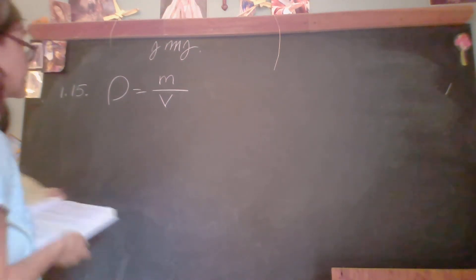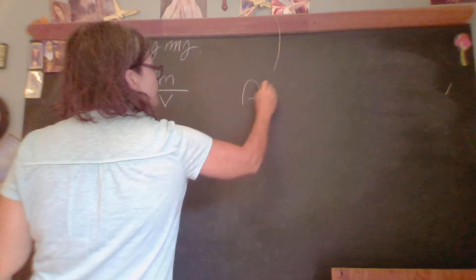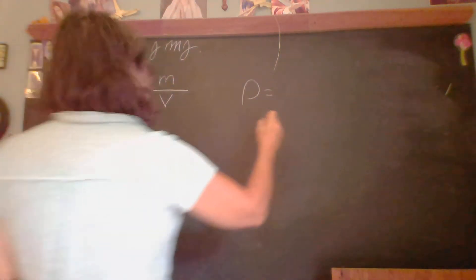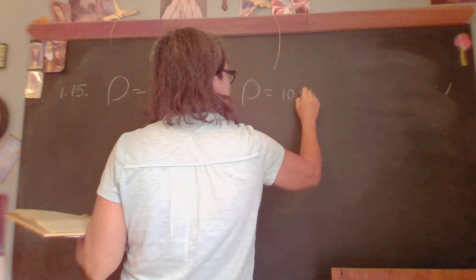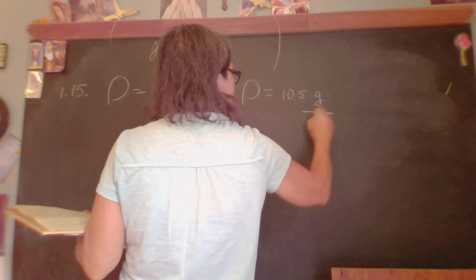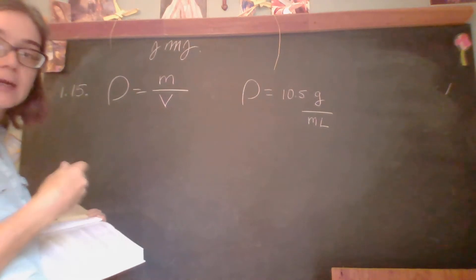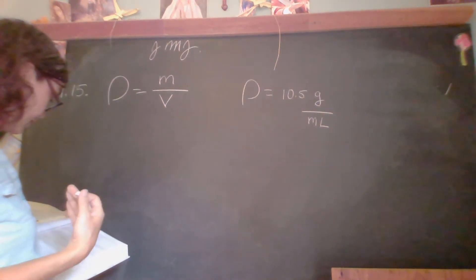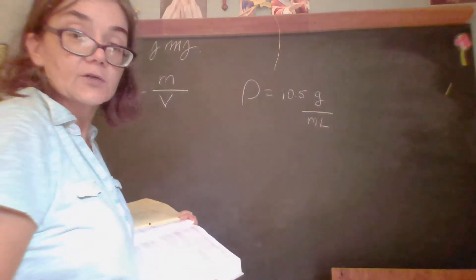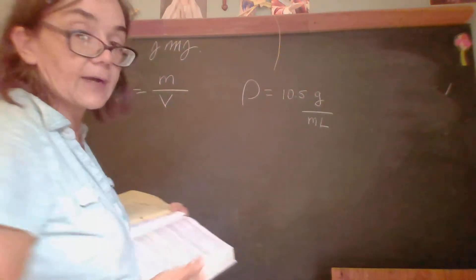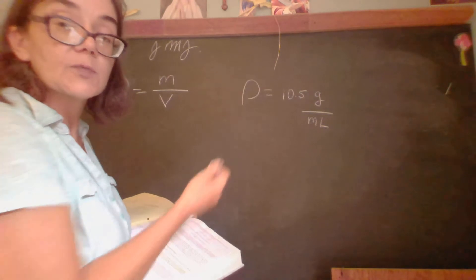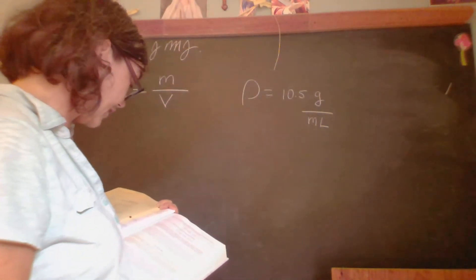We're given the density, 10.5 grams per cubic centimeter. Cubic centimeter is the same as milliliter, and so I'm going to do that translation right now because we're going to be asked to give the answer in milliliters. Because milliliters and cubic centimeters are exactly equivalent.